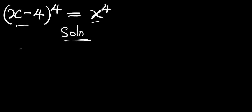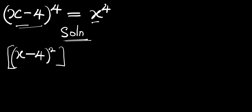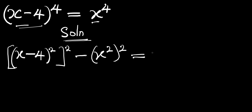So let's start. What we are going to do is write this as (x minus 4) squared, all squared — because if you multiply 2 times 2 you get 4. And we can rearrange this equation to have minus (x squared) all squared, and this equals zero, since 2 times 2 also gives 4.